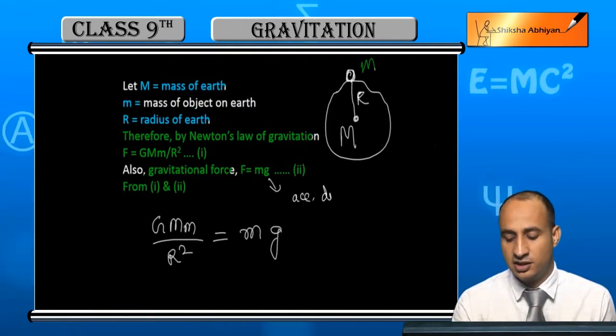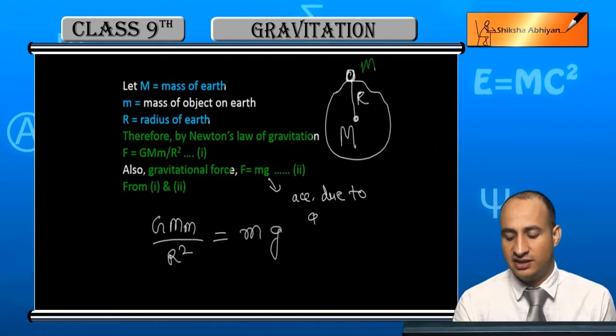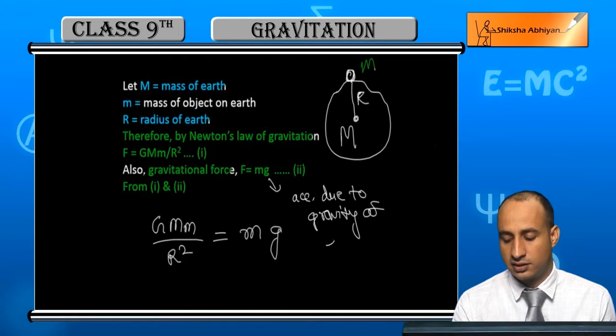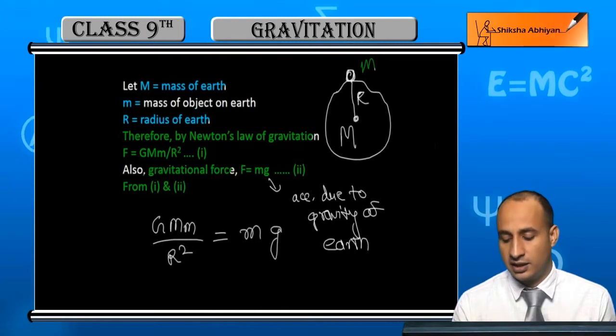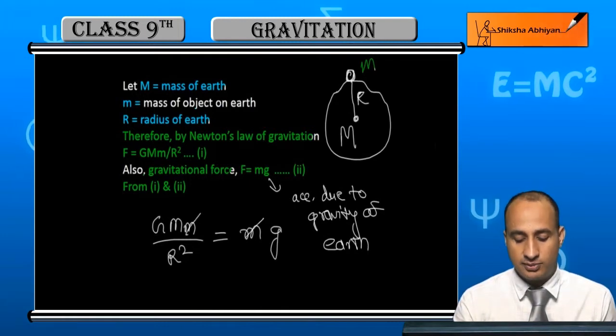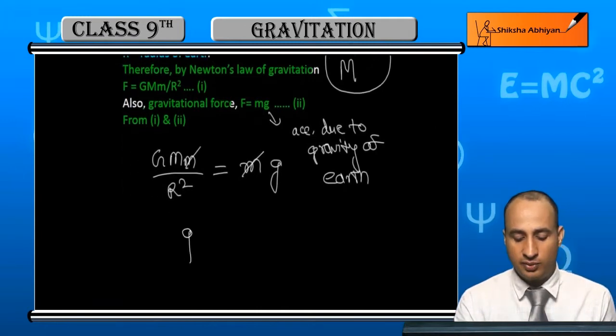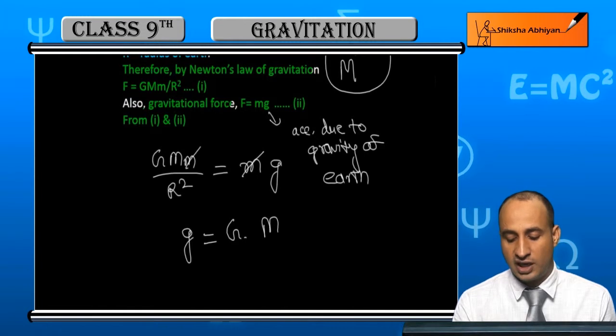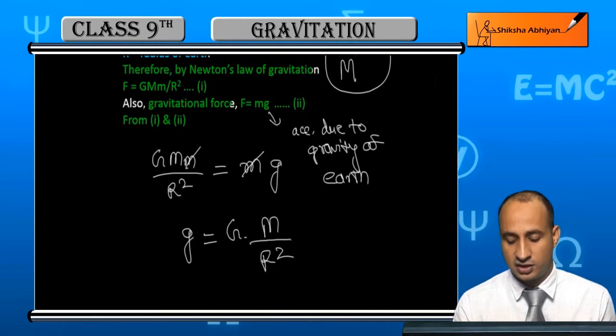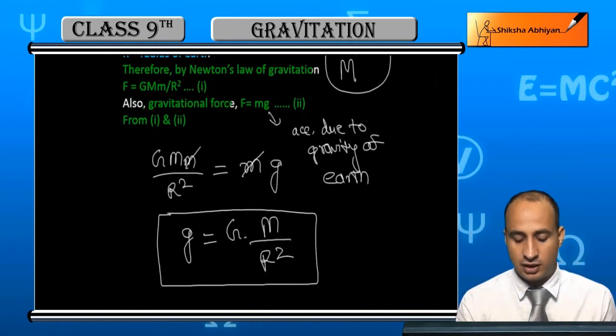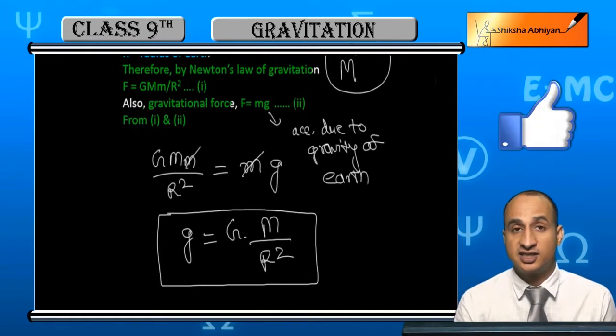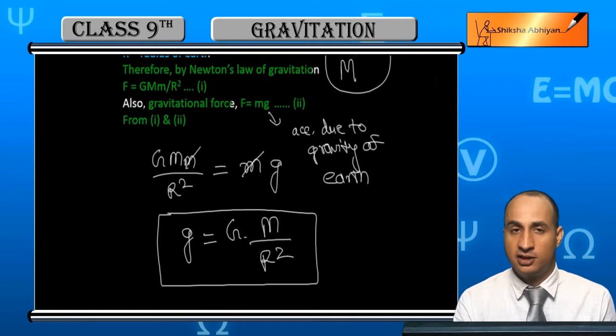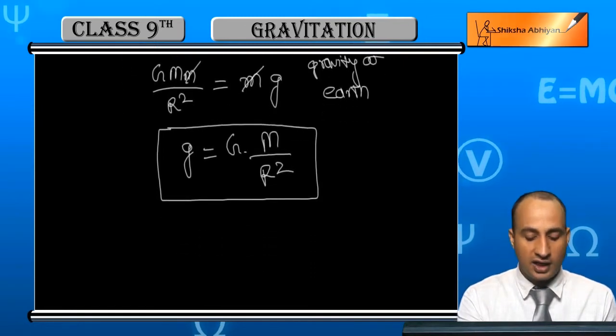Acceleration due to gravity of earth. Since we are calculating on earth, if I solve this, m cancels out. So g = G M / R². This is a general formula between small g (acceleration due to gravity) and gravitational constant.